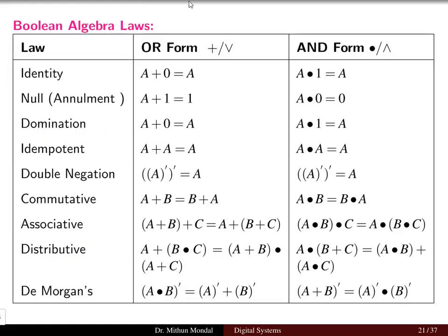Boolean algebra has different laws: the identity law, the null law, the domination law, the idempotent law, double negation, commutative, associative, distributive, and the most famous — De Morgan's law.